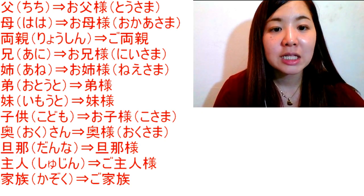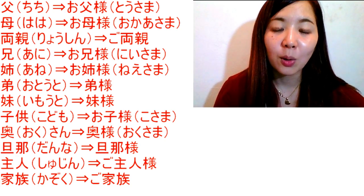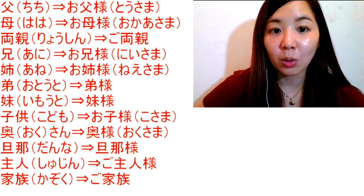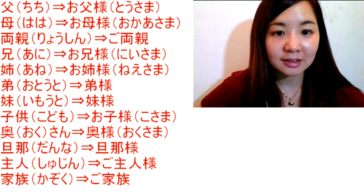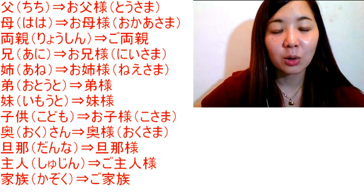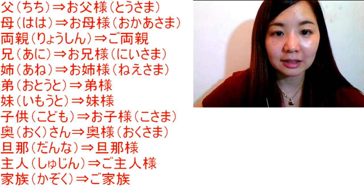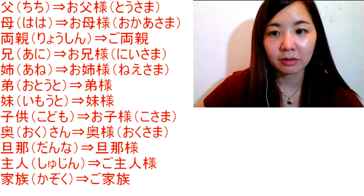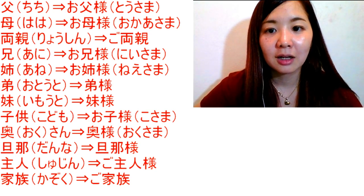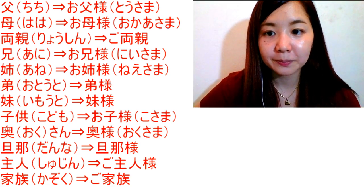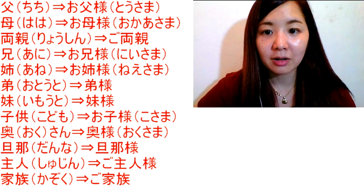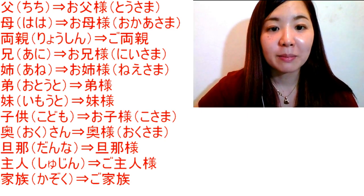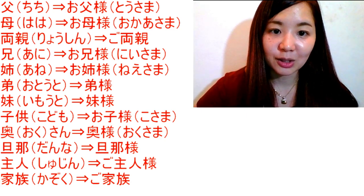When you talk about someone else's father, you use the honorific form. Onee-sama is your elder sister. Oto-to is my younger brother, and oto-to-sama is your younger brother. Imo-to is my younger sister, and imo-to-sama is your younger sister.